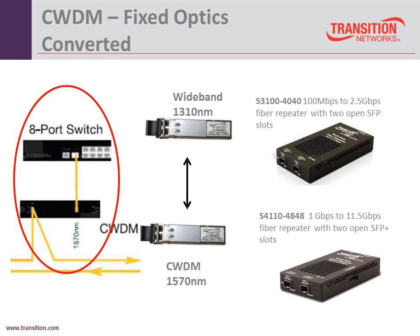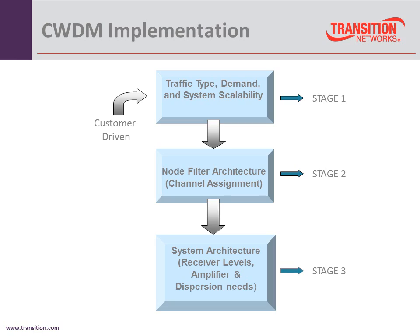Now let's look at implementation. We know we have these devices, these SFPs, we use a fiber loop. How do we implement this? What type of traffic is it and how much scalability do you need? What kind of channel assignments — do you need 8 capacity or the max 16? Both sizes fit in a 19-inch rack. Typically, if you're going to make the investment, go with 16, because eventually you'll fill up 8 and wish you'd gotten 16 in the first place. From an engineering standpoint, it's better to have more capacity than you need.